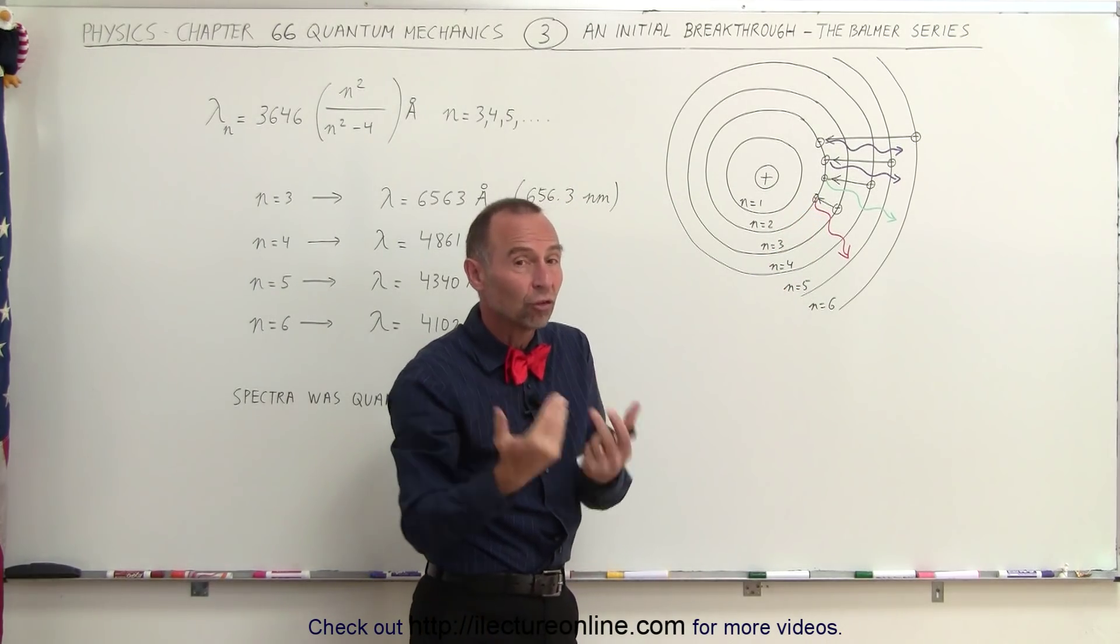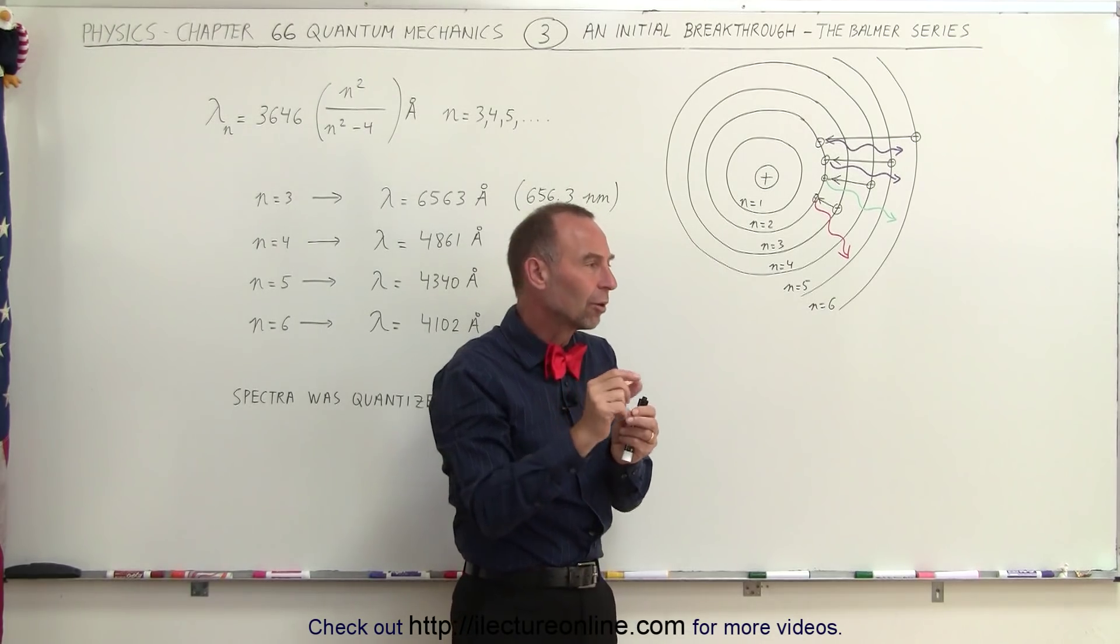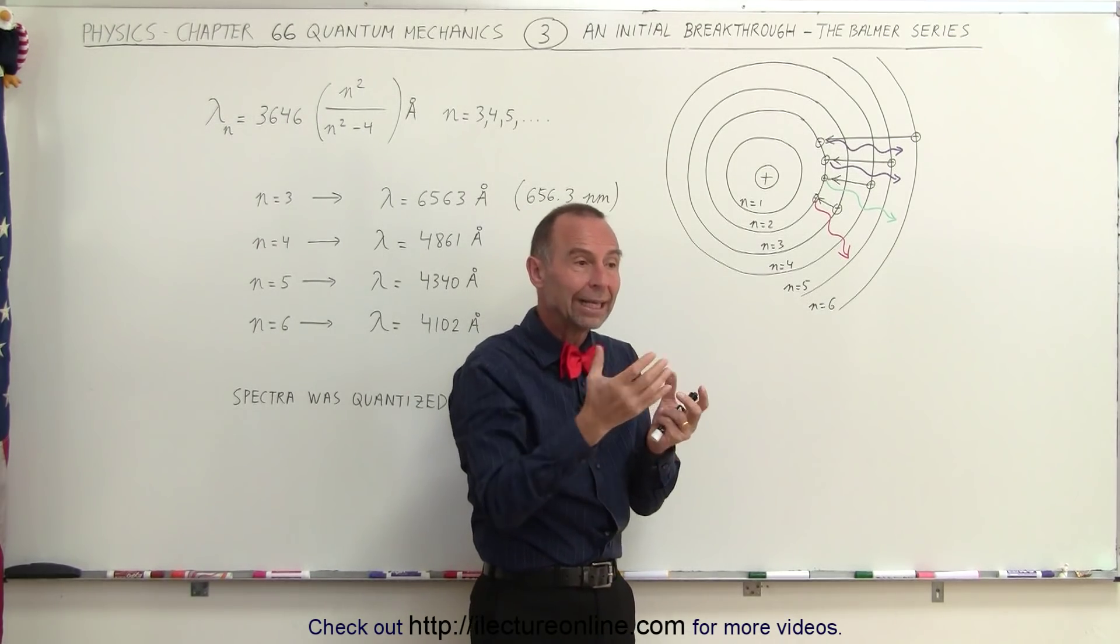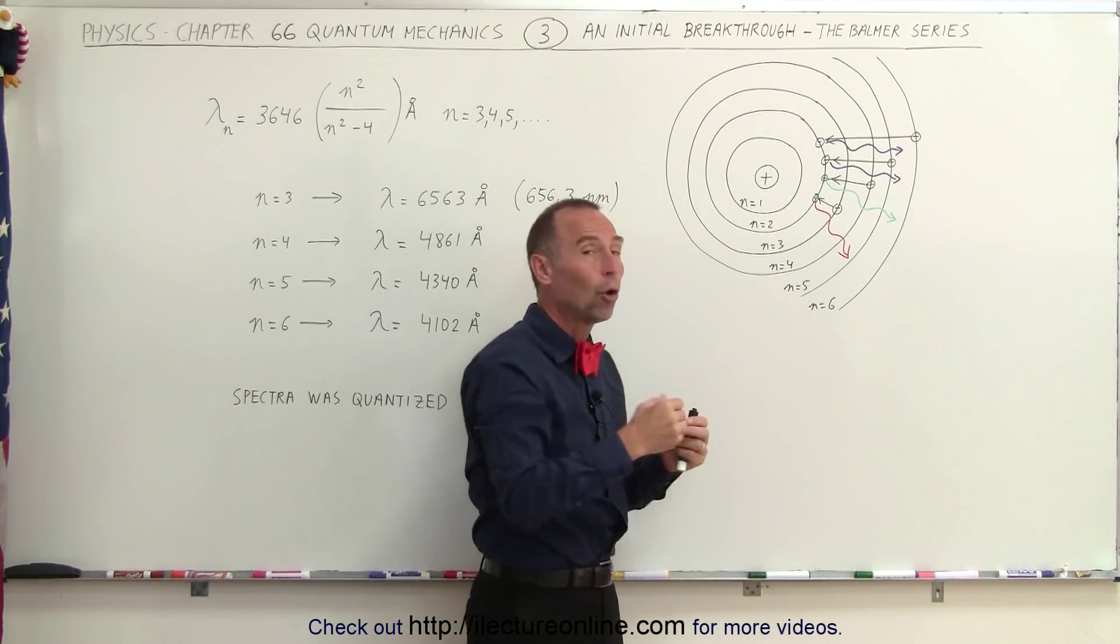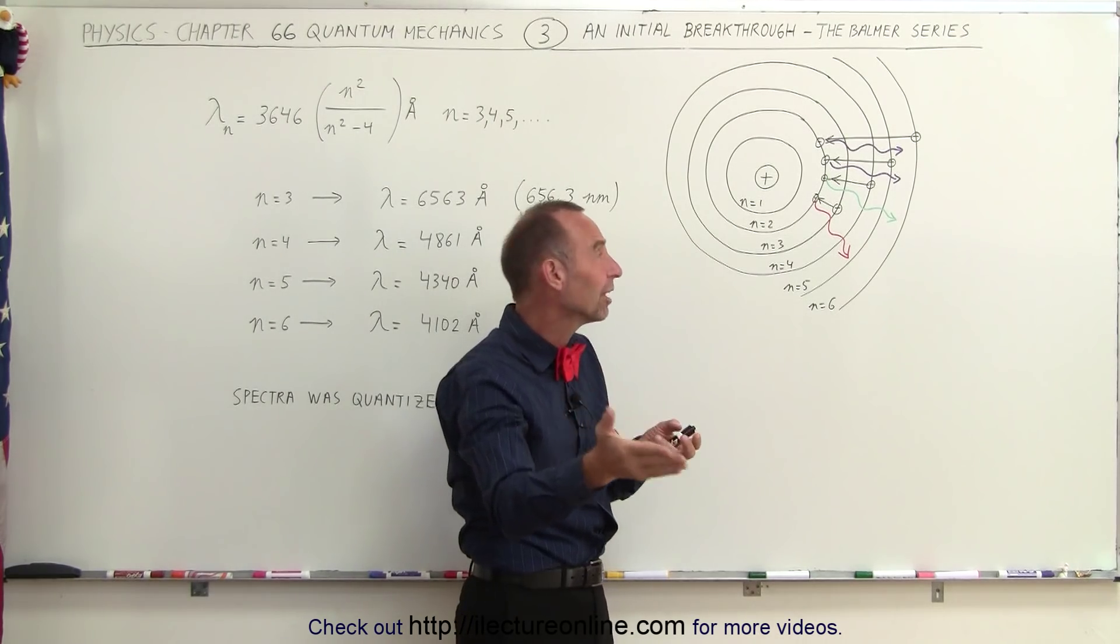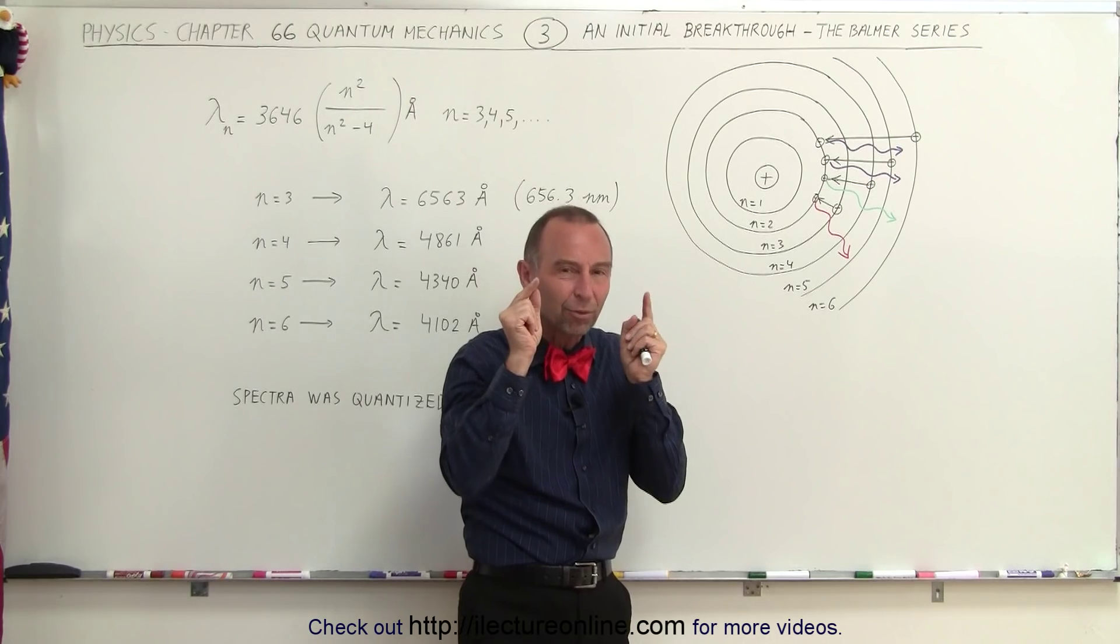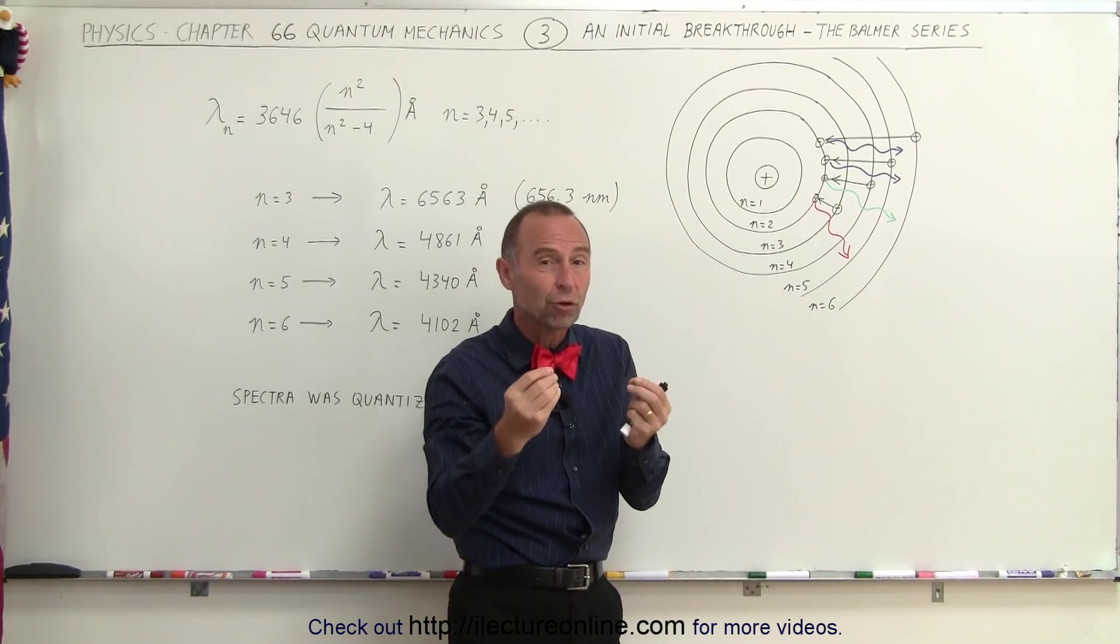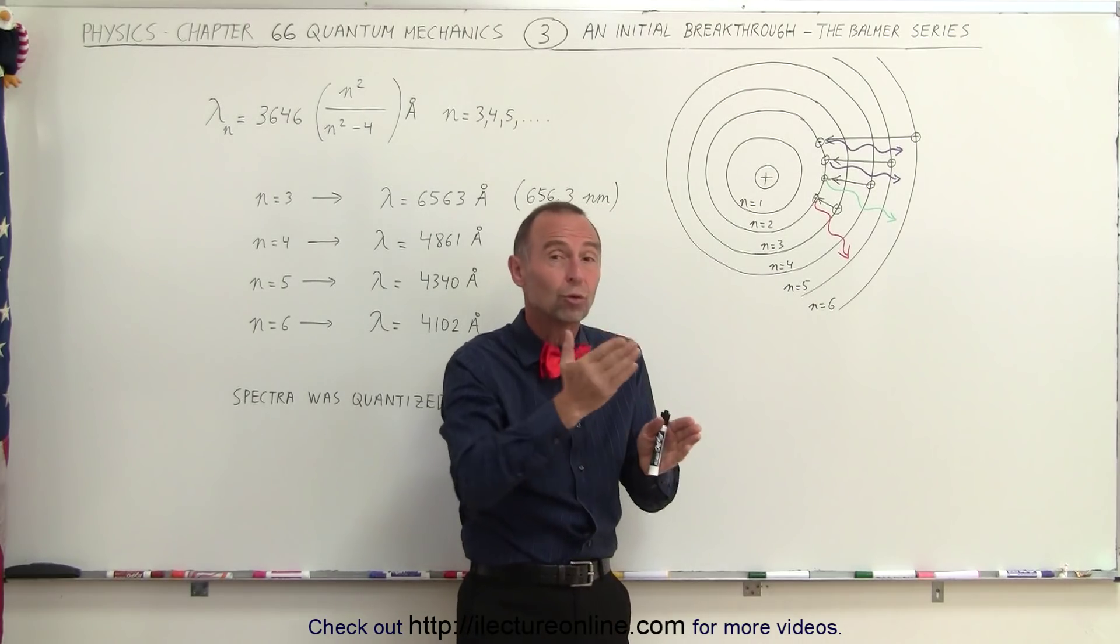Each one of those orbits is associated with a particular energy level so that when an electron has to jump from one level to another, it can only do so by either absorbing the exact amount of energy difference between the two levels, or when it falls back down from a higher energy level to a lower energy level, the electron will then give off a precise amount of energy in the form of a photon with that exact energy equal to the energy difference between the two energy levels.